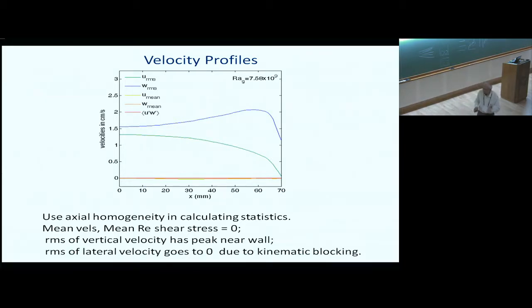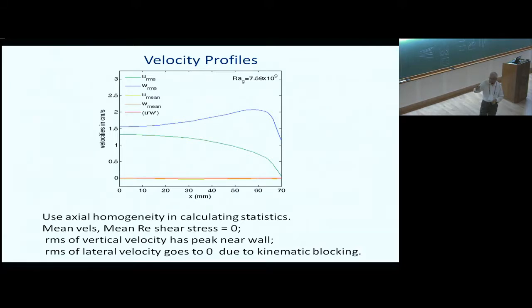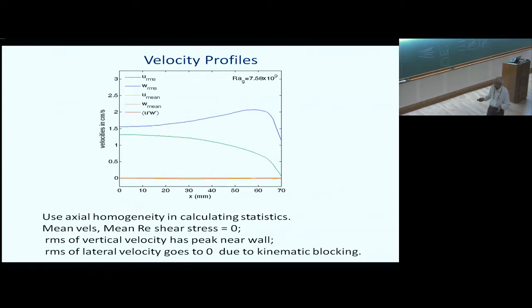People have looked at this in wind tunnels, where they create grid turbulence and there is a plate or belt moving at the same velocity as the free stream. But there the turbulence dies down with distance. Whereas in this case the turbulence is sustained. So next to the wall you have this highly turbulent sustained flow, which can be studied from both a fundamental and a modeling viewpoint.